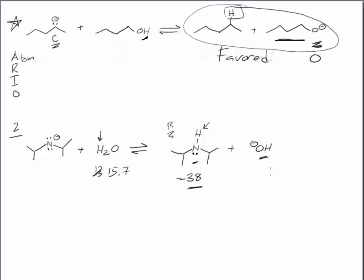And if we think about AREO again, it comes down to atom. We have an oxygen with our anion, and we have a nitrogen with the anion on the left side.